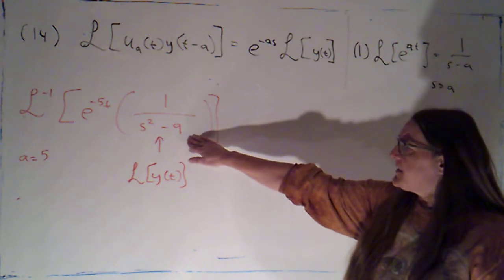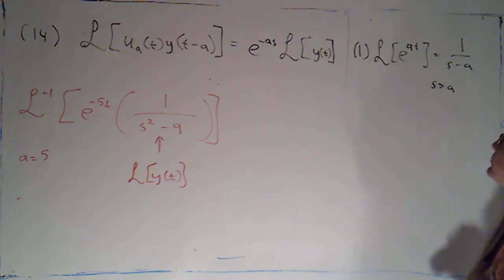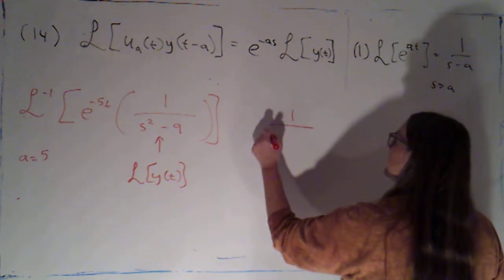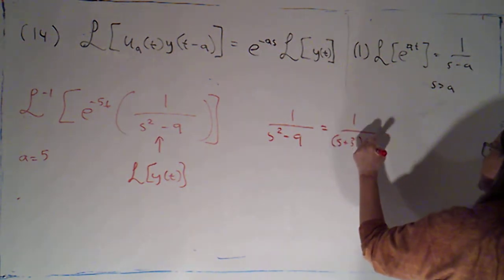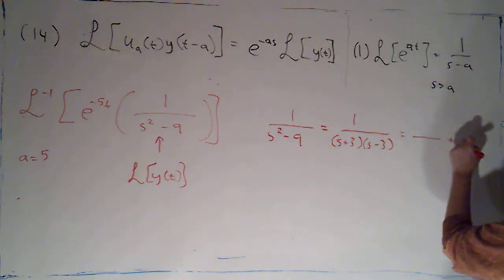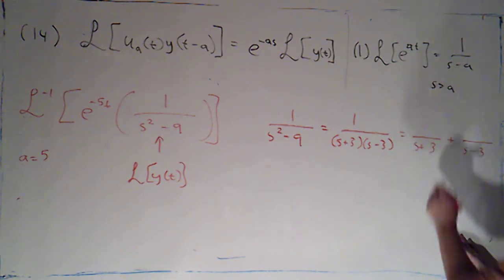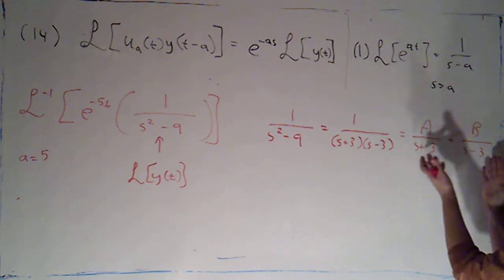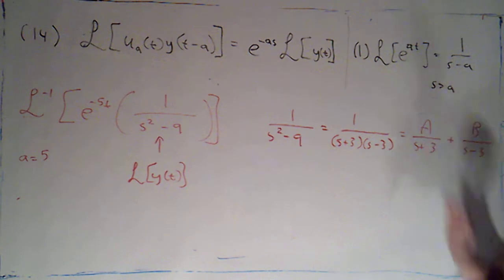It's a little bit tricky right now with this s squared minus 9, so I'm going to use some partial fractions to write that as a sum of two pieces. So 1 over s squared minus 9 is 1 over (s plus 3)(s minus 3) — that's two linear factors. That's going to contribute two fractions with denominators s plus 3 and s minus 3, and the numerators will just be constants A and B. To solve for A and B, I'm going to multiply through by the least common denominator to clear all of the denominators.